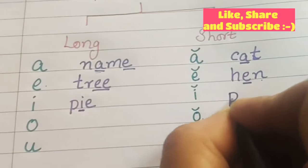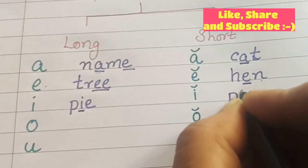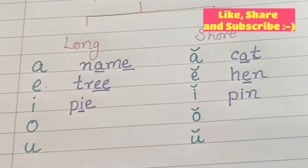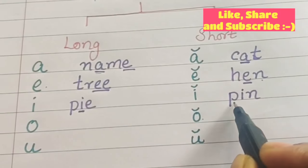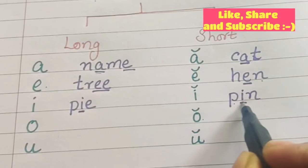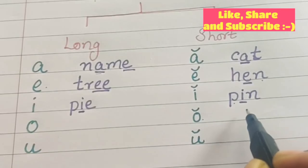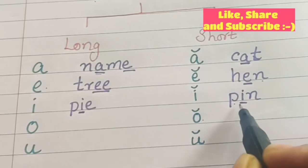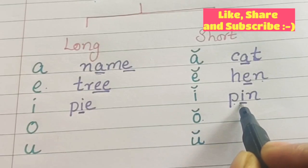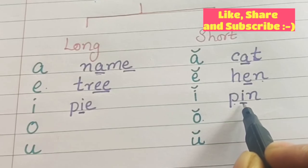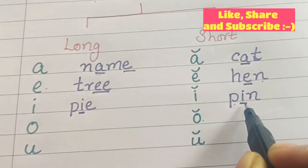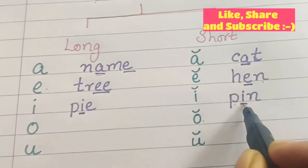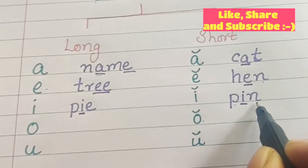Now short vowel I. P-I-N, pin. So what is the pronunciation of I? It is coming as I. P-I-N, pin.